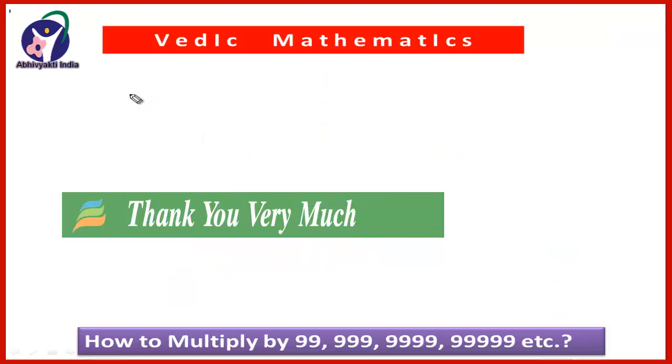Friends here are a few products for you. Solve it and give the answers in the comment box. 6,789 multiplied by 9,999, then 423 multiplied by 9,999, then 23 multiplied by 9,999 and last is 673 multiplied by 9,999.